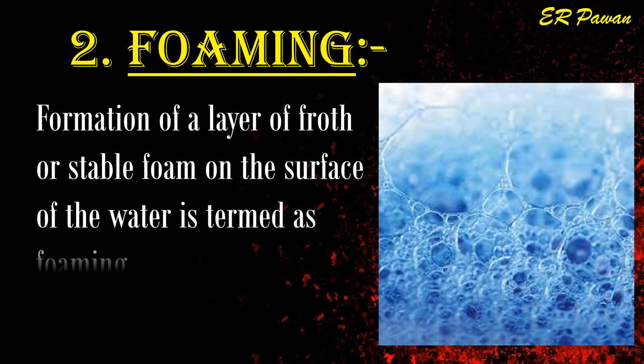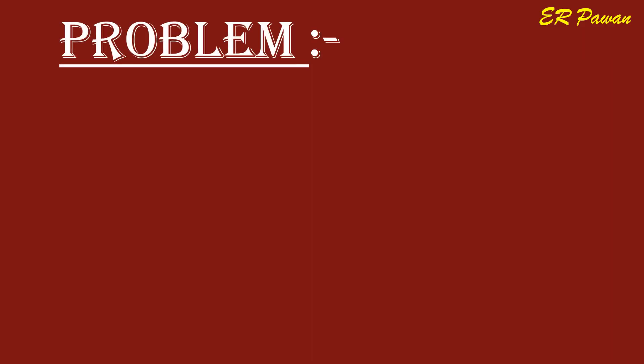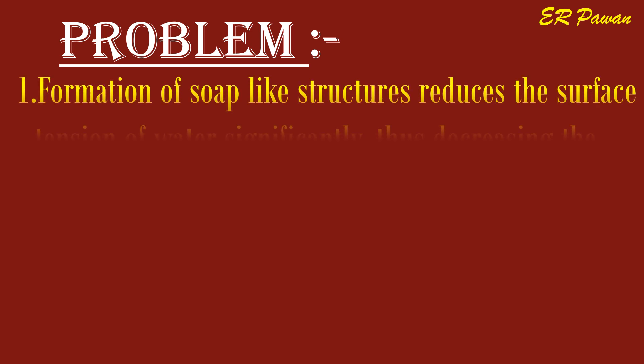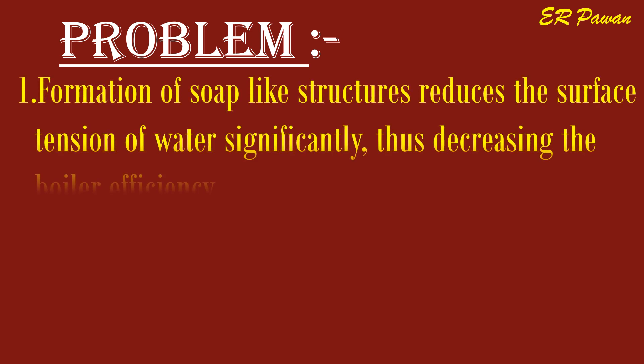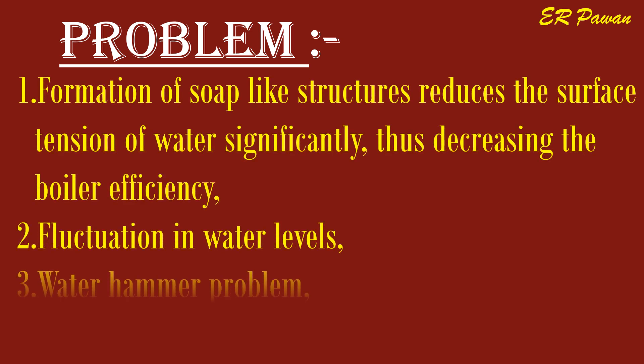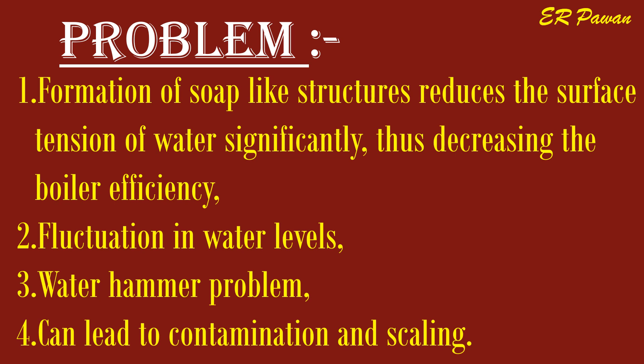Problem two: foaming. Formation of a layer of froth or stable foam on the surface of the water is termed as foaming. Problems: one, formation of soap-like structures reduces the surface tension of water significantly, thus decreasing boiler efficiency; two, fluctuation in water levels; three, water hammer; four, can lead to contamination and scaling.